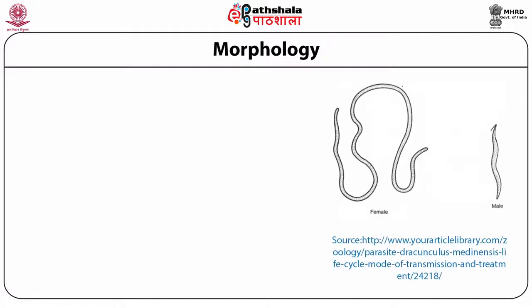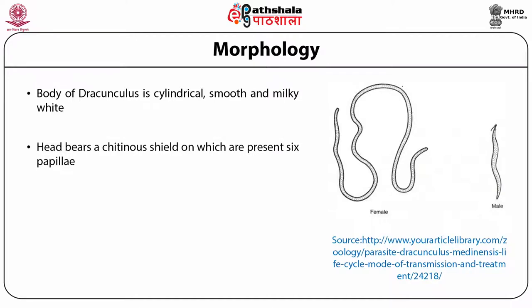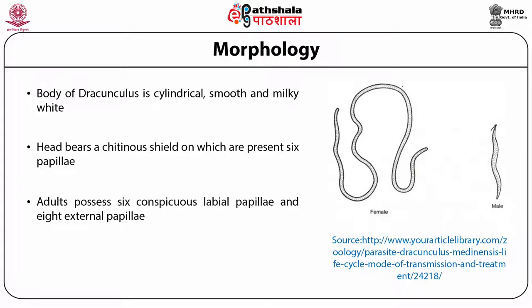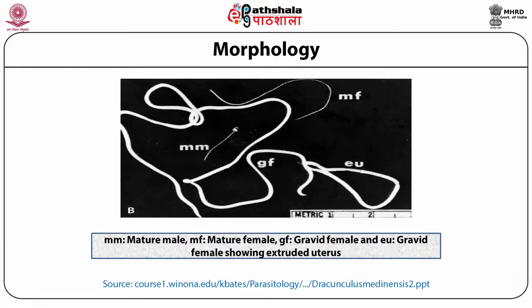The body of Dracunculus is cylindrical, smooth and milky white. The head bears a chitinous shield on which are present six papillae. Adults possess six conspicuous labial papillae and eight external papillae. Dracunculus shows sexual dimorphism. You can see the mature male and mature female Dracunculus, with a gravid female being shown with the extruded uterus.